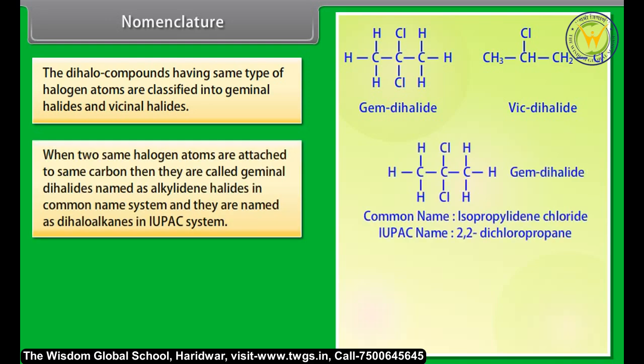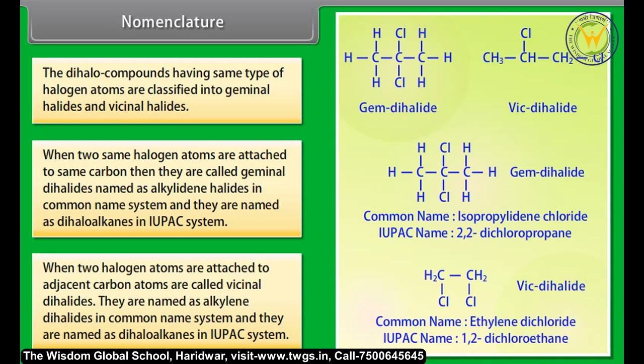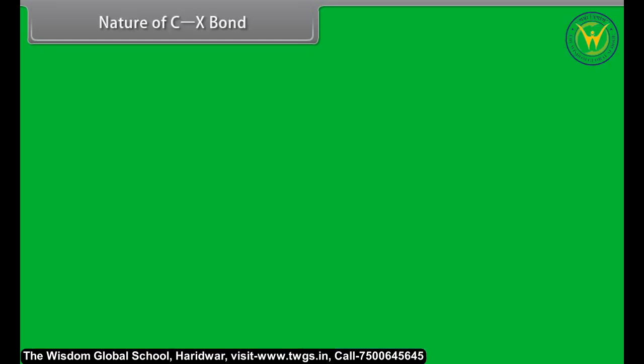When two identical halogen atoms are attached to the same carbon, they are called geminal dihalides, named as alkylidene dihalides in the common system and as dihaloalkanes in the IUPAC system. When two halogen atoms are attached to adjacent carbon atoms, they are called vicinal dihalides, named as alkylene dihalides in the common system and as dihaloalkanes in the IUPAC system.